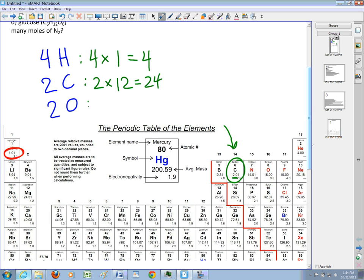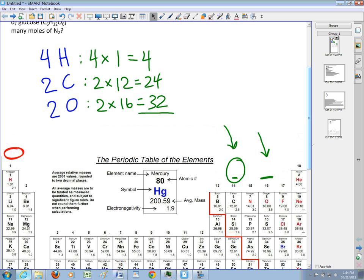Oxygen is also on the right-hand side of the table. It has an atomic mass of 16. There's two of them in my compound, so 2 times 16 is 32. And if I add all of these together, the grand total of all of those atomic masses together is 4 plus 24 plus 32, which should be 60.